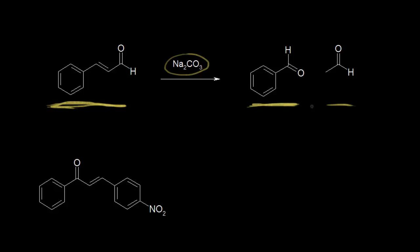Let's analyze our cinnamaldehyde starting compound to see how we would form those products. We know the carbon next to our carbonyl is our alpha carbon, and the carbon next to that is the beta carbon. Looking at the structure, we know there's a hydrogen attached to our alpha carbon. If we think about breaking this double bond, we can see this two-carbon setup for acetaldehyde. Those are the two carbons, and this is the hydrogen bonded to that alpha carbon. We can think about adding two hydrogens to this alpha carbon.